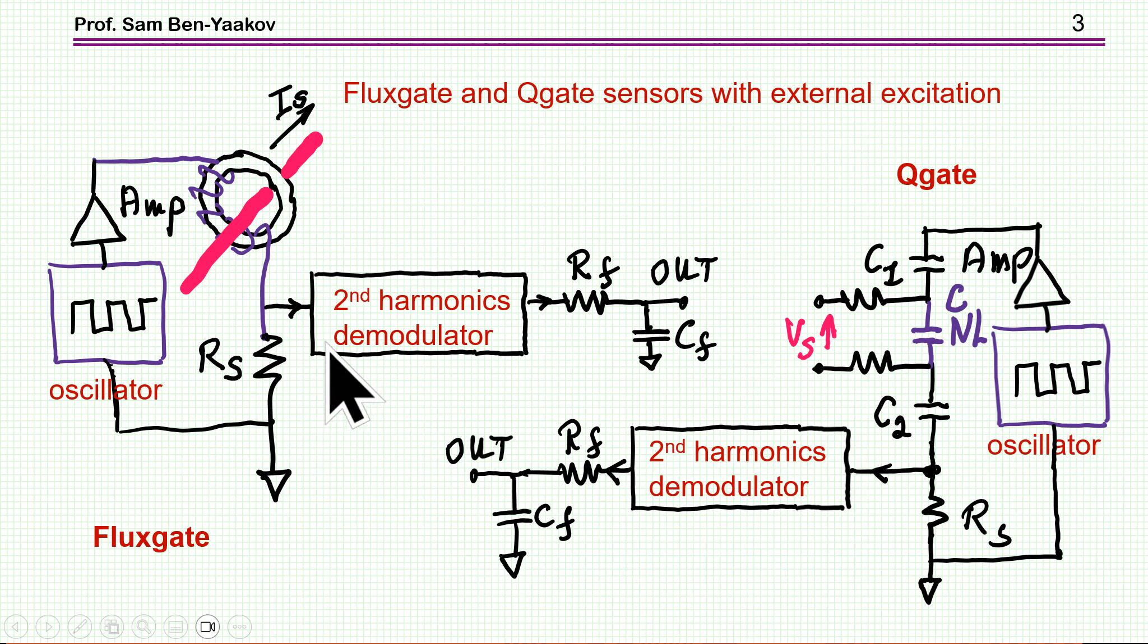So by demodulating and extracting the second harmonics, filtering out, you get an output which is linear in a certain range, of course, with the measured current. Now this dual approach, which I'm presenting here, I think it's new and if anybody knows of any previous description of such a circuit, I'll be more than interested to know about that.